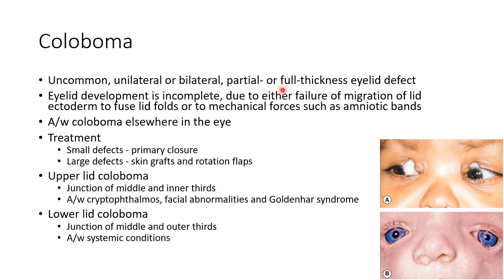Now let us discuss about coloboma. It is an uncommon unilateral or bilateral partial or full thickness eyelid defect. Eyelid development is incomplete due to either failure of migration of lid ectoderm to fuse lid folds, or due to mechanical forces such as amniotic bands. Eyelid coloboma can be associated with coloboma elsewhere in the eye. For small defects we can do primary closure, and for large defects we can use skin grafts and rotation flaps.